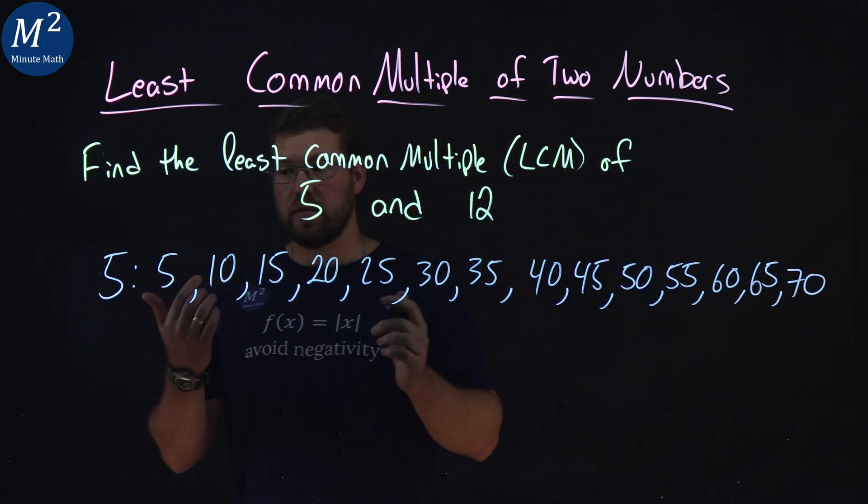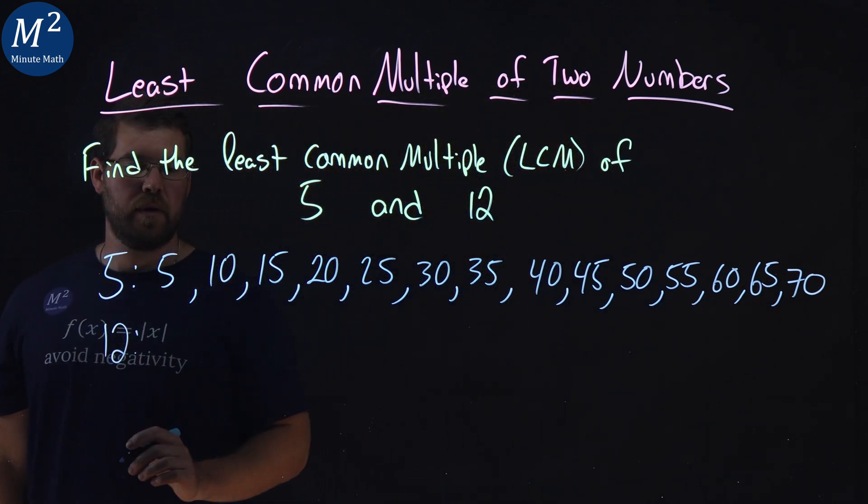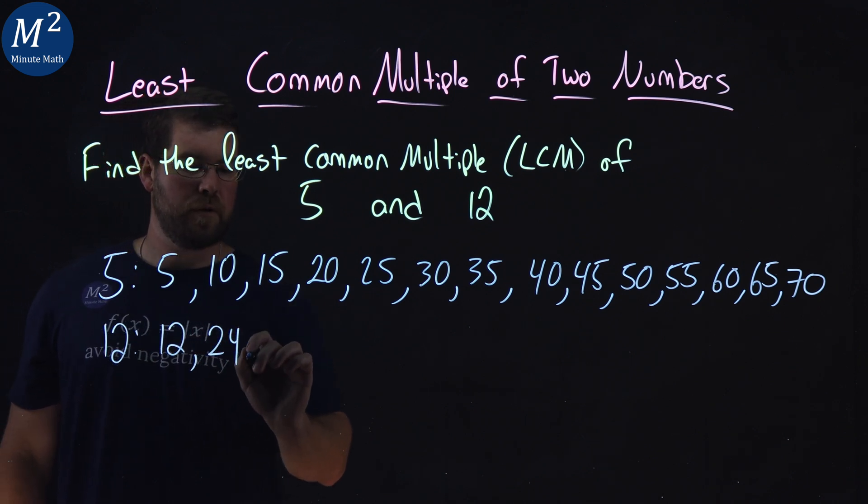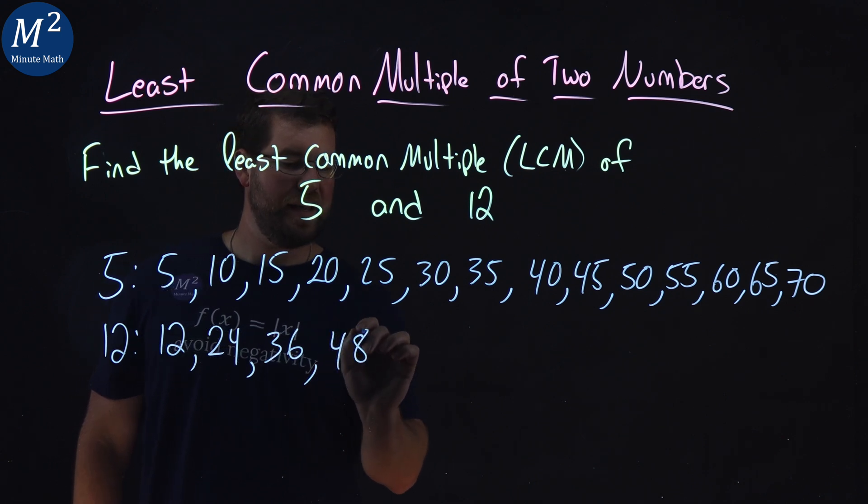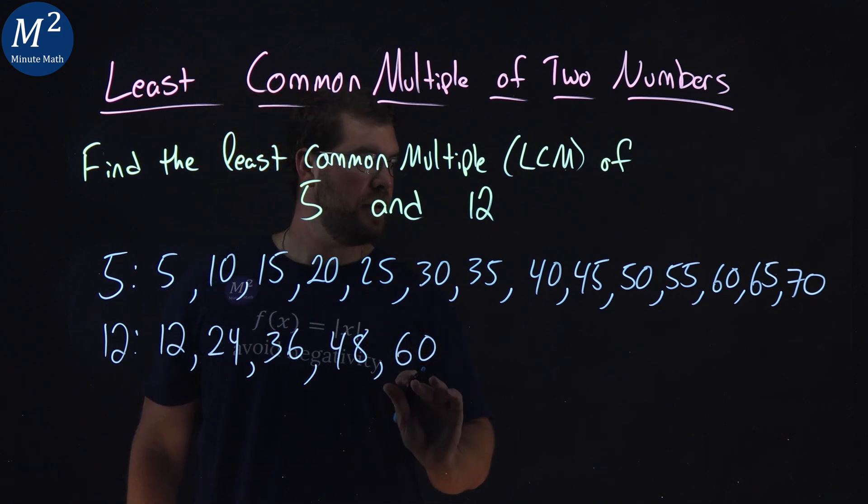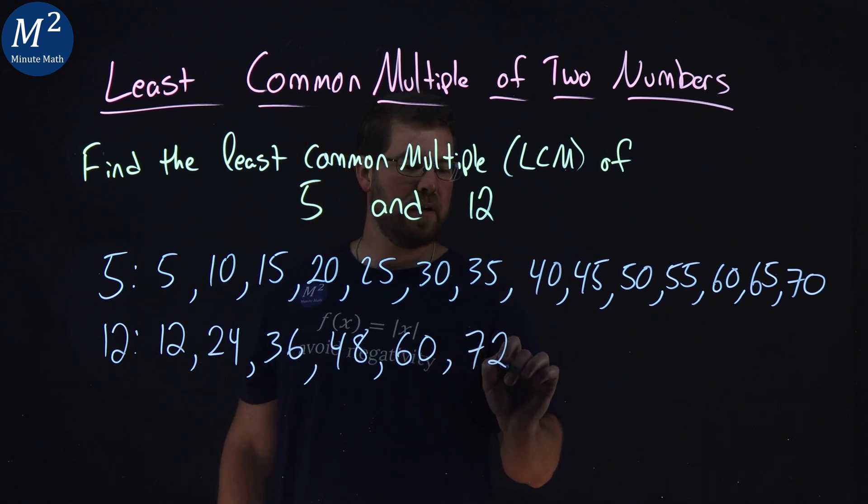Now let's write the multiples of 12. We have 12, 24, 36, 48, 60, and I can keep going. I get a 72 here.